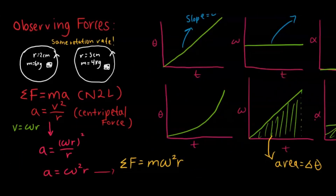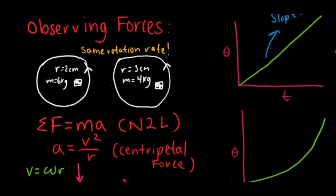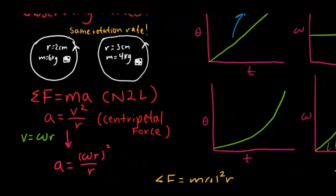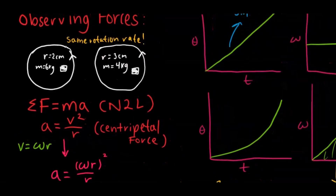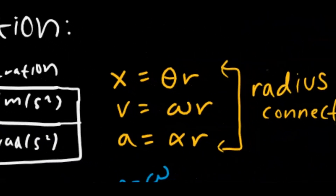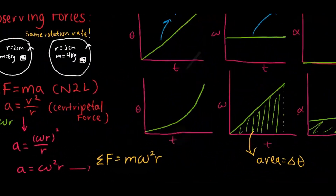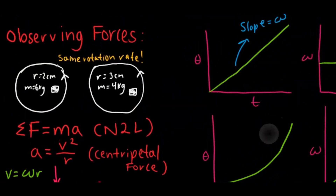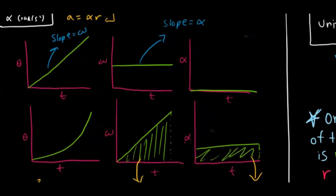Regarding forces: when you have something with the same rotation rate and you're comparing it, you can analyze it using circular motion. Net force equals ma, and the acceleration equals the centripetal acceleration, V²/R. You can replace V² with angular velocity ω times R squared, since linear and angular motion are connected. That gives you the net force exerted when observing from an angular perspective.